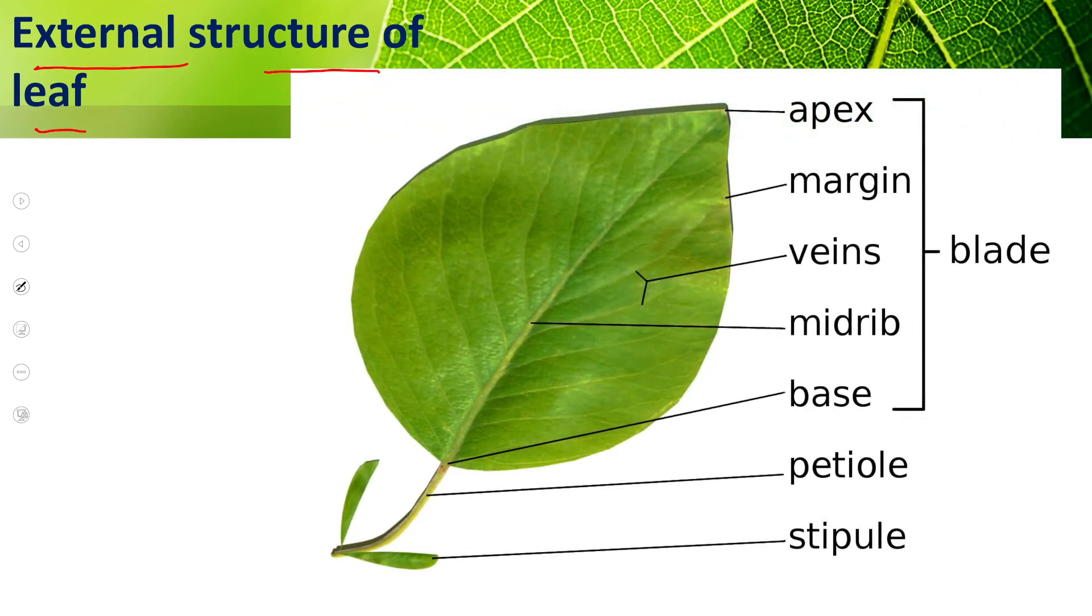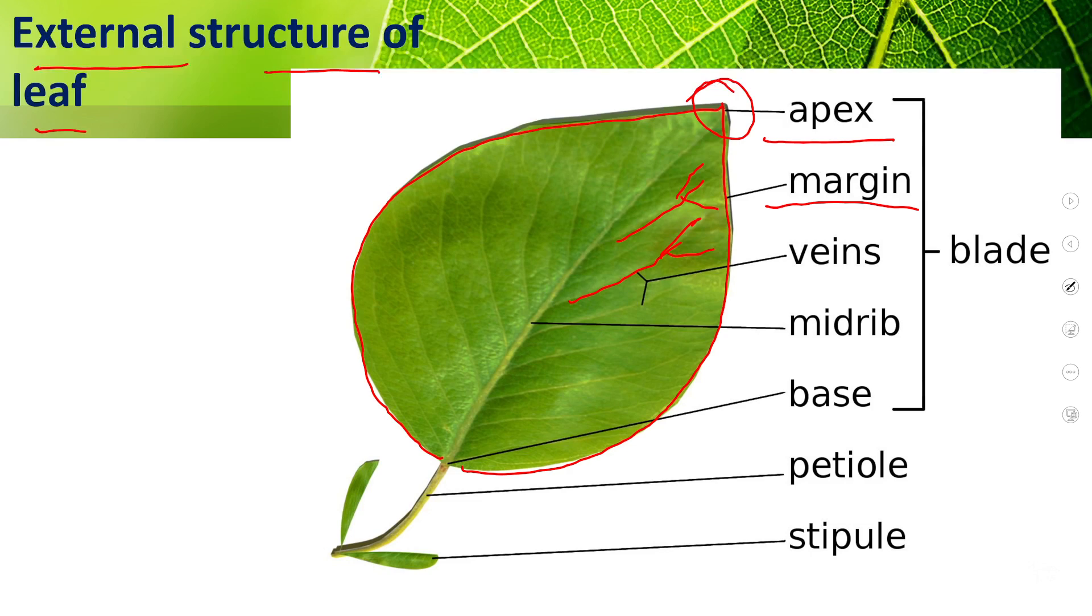First of all, the tip of leaves is the apex. The boundary of leaves is the margin. Then the leaves have small veins. These are the vascular bundles.